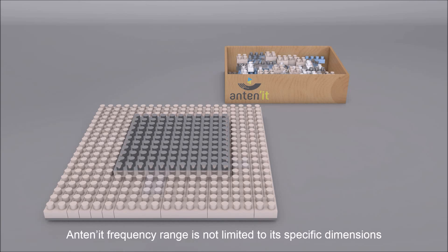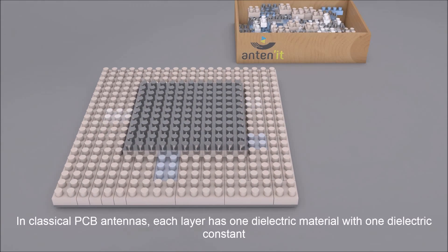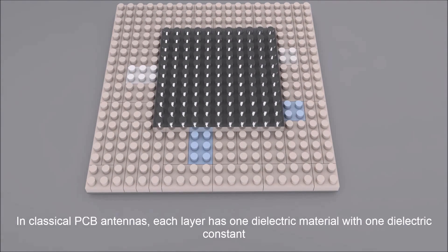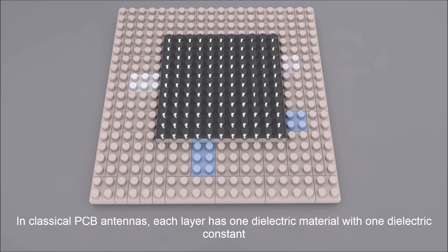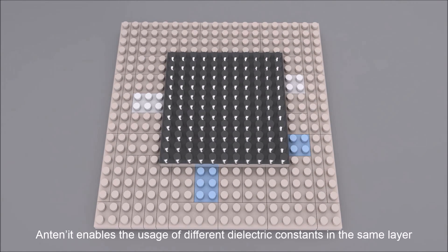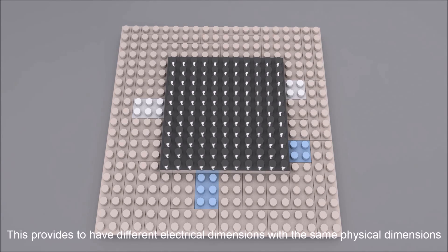Antennate frequency range is not limited to its specific dimensions. In classical PCB antennas, each layer has one dielectric material with one dielectric constant. Antennate enables the usage of different dielectric constants in the same layer. This provides different electrical dimensions with the same physical dimensions.